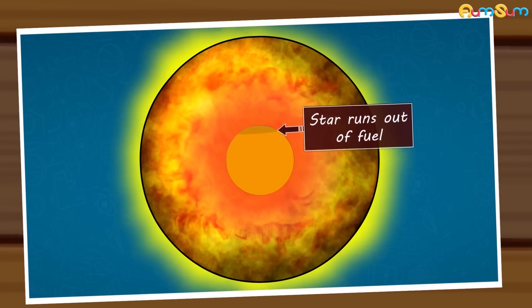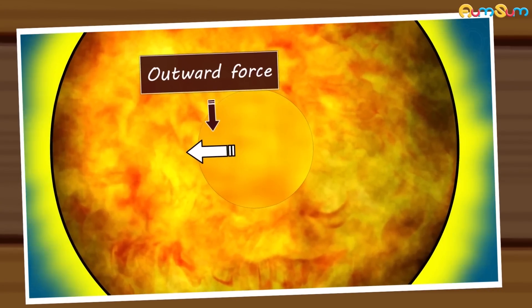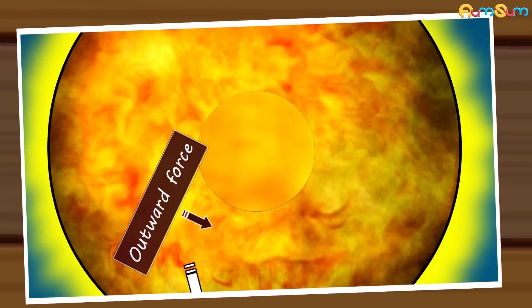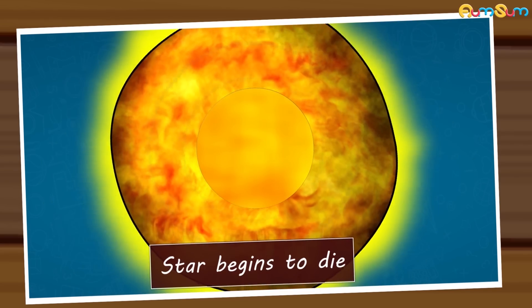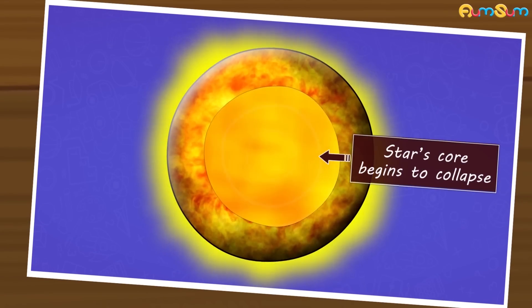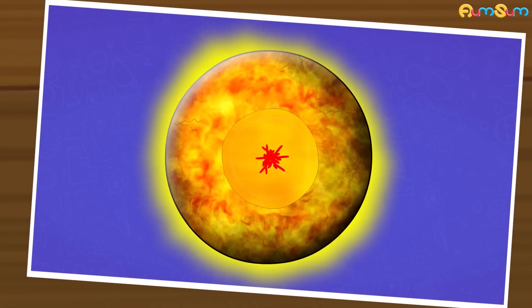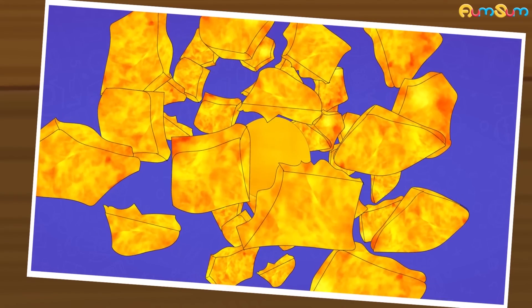However, when the star runs out of fuel, there are no hot gases and radiation. Hence, there is no outward force to balance the inward pull of gravity and thus, the star begins to die. The star's core begins to collapse under its own gravity. This collapse causes the outer layers to blow apart in a huge explosion called a supernova.